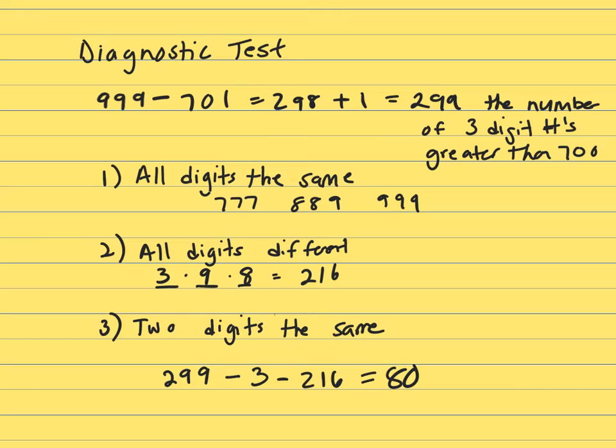Alright, so we're talking about the numbers from 701 up to 999, and let's figure out how many numbers we have in that range. Well, the way you do that, you take the greater number minus the smaller number, and you always add 1. So we're talking about 299 numbers.